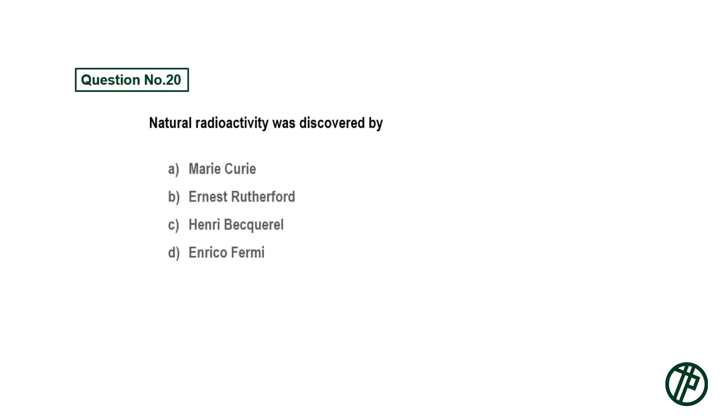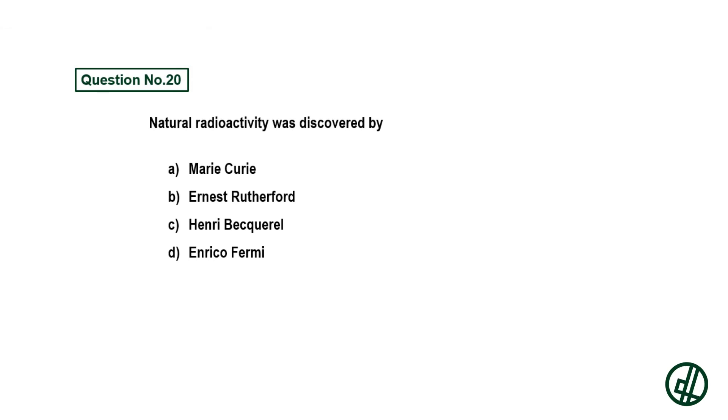Question number twenty: Natural radioactivity was discovered by — option A: Marie Curie, option B: Ernest Rutherford, option C: Henry Becquerel, option D: Enrico Fermi. Answer is option C: Henri Becquerel.